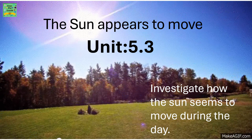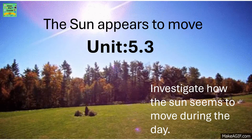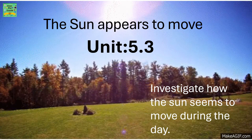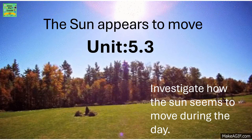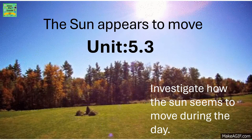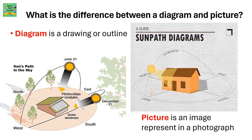Unit 5.3: investigate how the sun seems to move during the day. What is the difference between a diagram and a picture? A diagram is a drawing or outline showing the sun's path in the sky. A picture is an image represented in a photograph.